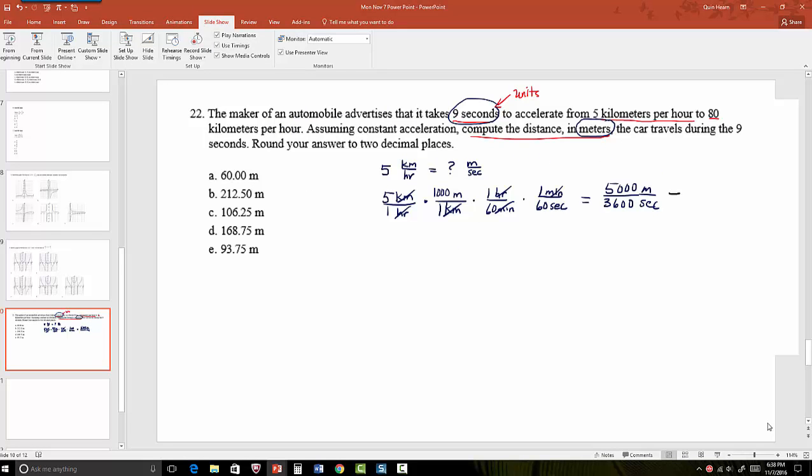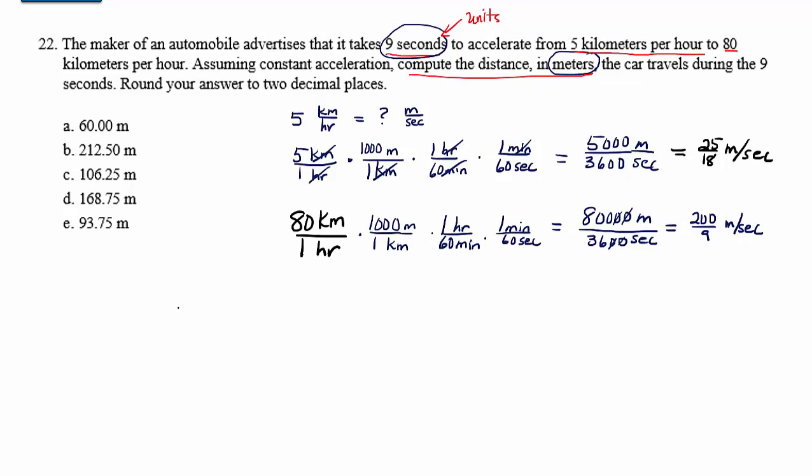I'm going to reduce that as much as possible, but leave it as a fraction for the time being so as to prevent round-off errors. So for now, I'm just going to reduce that down to 25 eighteenths of a meter per second. So this is the five kilometers per hour. Similarly, we can convert 80 kilometers per hour. 80 kilometers per one hour. So now everything is in terms of meters and seconds.